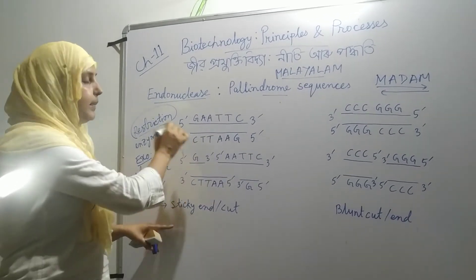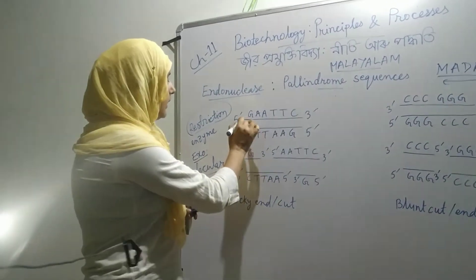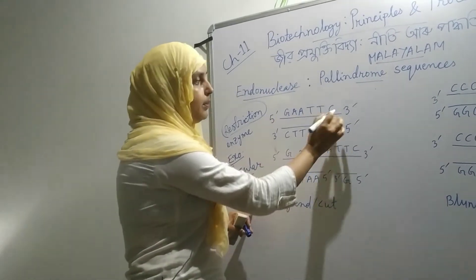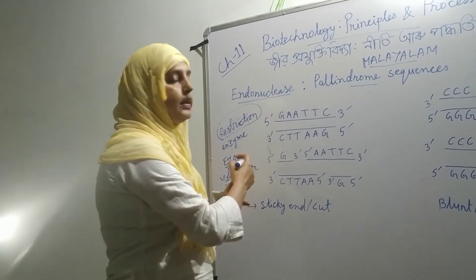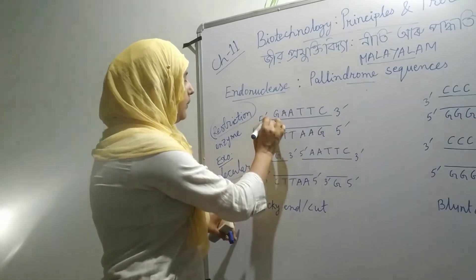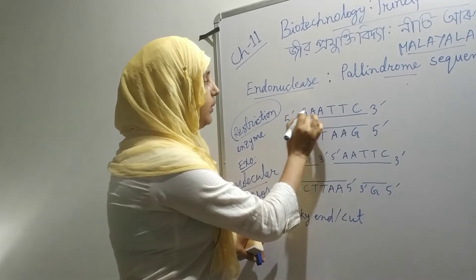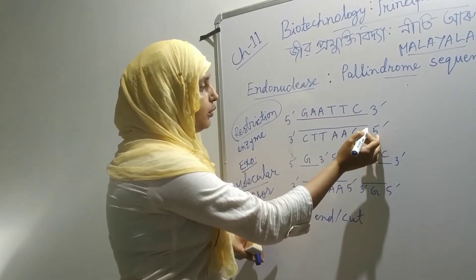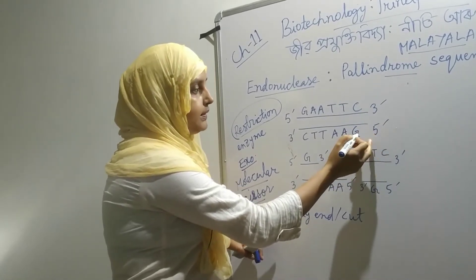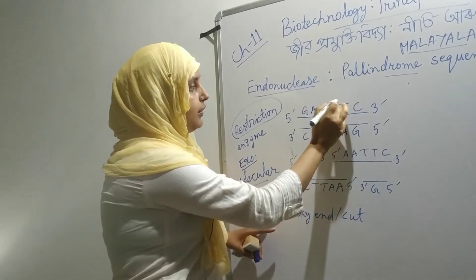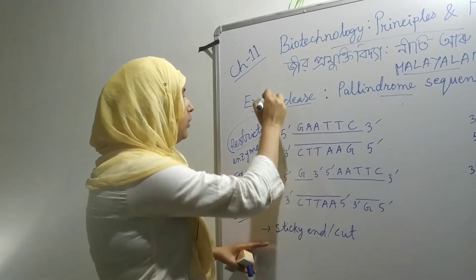Next, this is the 3' and 5' palindrome sequence used in DNA. The sequence 5' to 3' is called G-A-A-T-T-C. We can use GAATTC as the recognition sequence. This is the recognition sequence GAATTC that we use with the endonuclease.